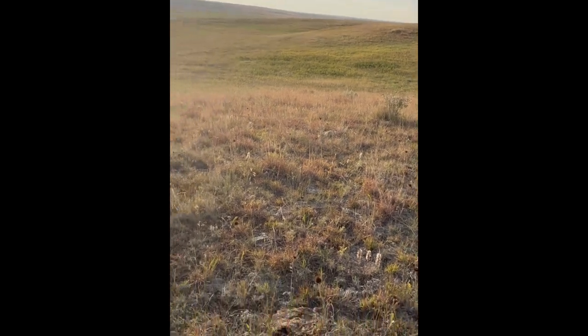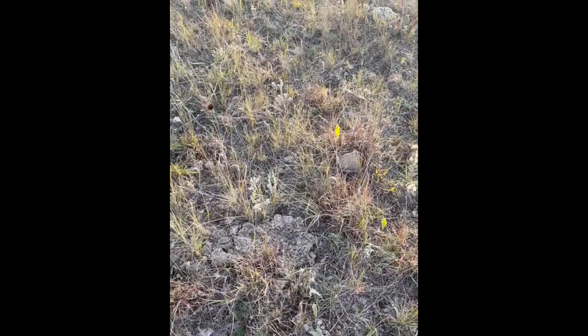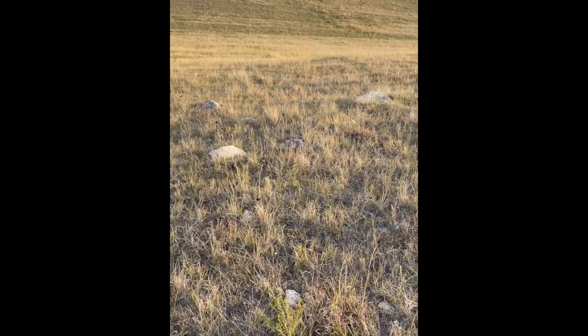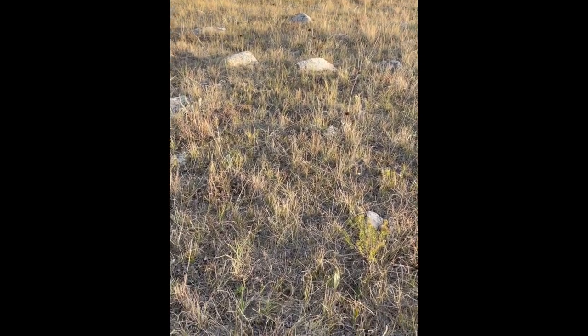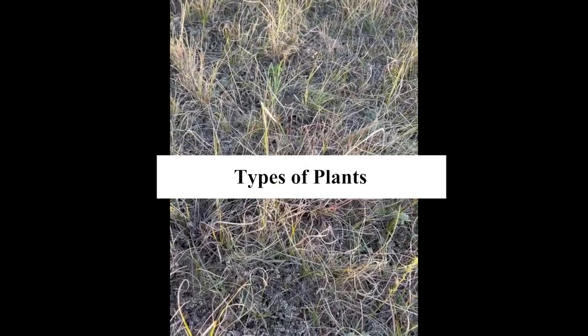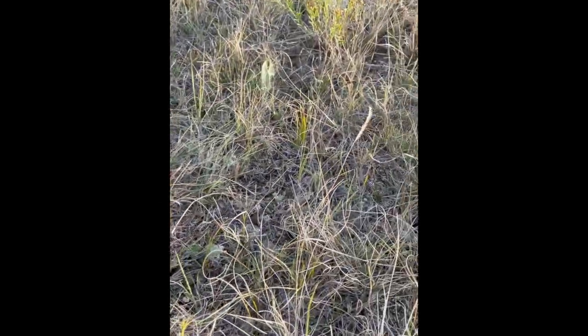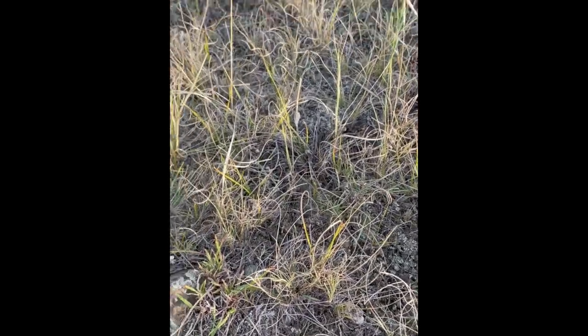The mixed grass prairie, like shown here, is composed of short and tall grasses. As you head further west across South Dakota, you'll find shorter grass prairies, or mixed grass prairie, that's made up of our short grasses including prairie june grass, blue grama, buffalo grass, and sedge type of species.